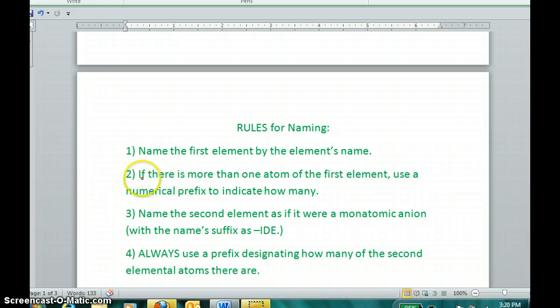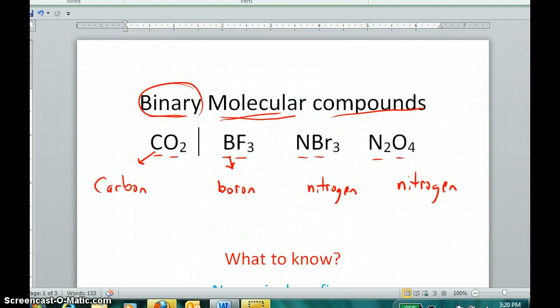The second rule is, if there is more than one atom of that first element, use a prefix to indicate how many. Well, there aren't more than one carbon atoms in this compound, so I put no prefix in this case. If there's more than one of the first element, but there's only one boron, so I would not use a prefix. Same is the case here. However, in the fourth example, we do have two of the first element, and the prefix for two is di. So this is dinitrogen something.